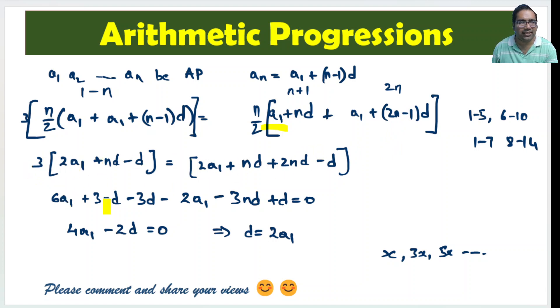Let us just expand. 3 into 2, 6a1 plus 3nd minus 3d. And let us bring this part also to the left side. Minus 2a1 minus 3nd minus d will become plus d. This 3nd and this 3nd will cancel each other. 6a1 minus 2a1 which is 4a1. And minus 3d plus d will become minus 2d.